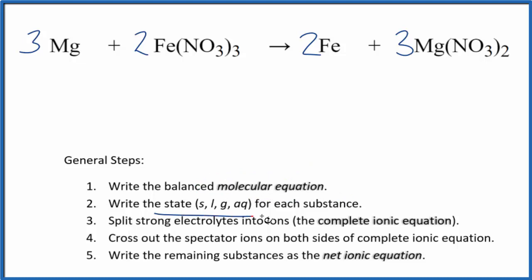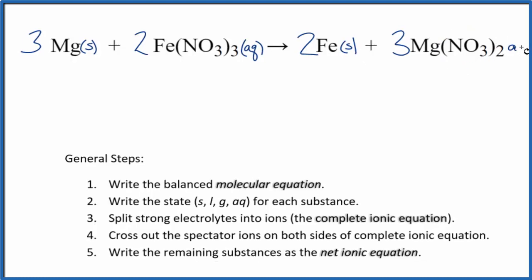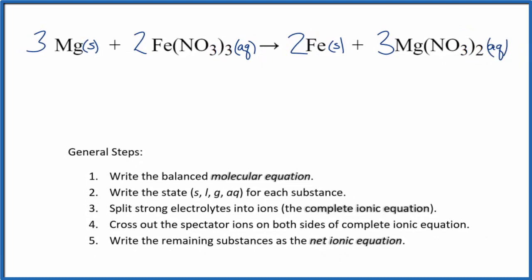Next we need to write the state for each substance. Magnesium, that's just a metal, it's all by itself. Nitrates, if you know your solubility rules, very soluble, write AQ there. Iron, that's a metal. Then another group, nitrates here, so AQ, soluble, dissociate into its ions.